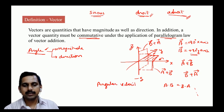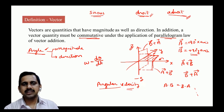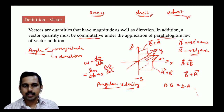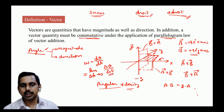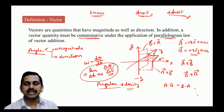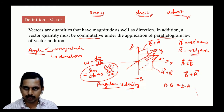Angular velocity omega equals d-theta by dt. When you differentiate, it means the limit as delta-t tends to 0 of delta-theta over delta-t. When delta-t tends to 0, delta-theta becomes very small. For small angles, the quantity is commutative, so angular velocity qualifies as a vector.